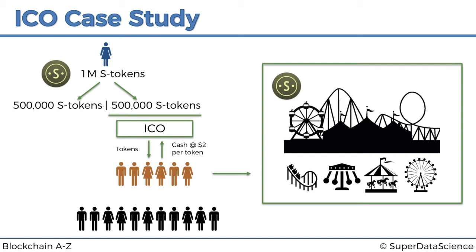If the idea is successful, more people will want to go to the theme park or invest in tokens. They'll need to buy tokens off the people who already bought them — they get tokens, and in exchange they pay cash. Because there's more demand and there will never be more than 1 million S tokens, supply is limited but demand is growing. So the price increases — for example, to six dollars per token.